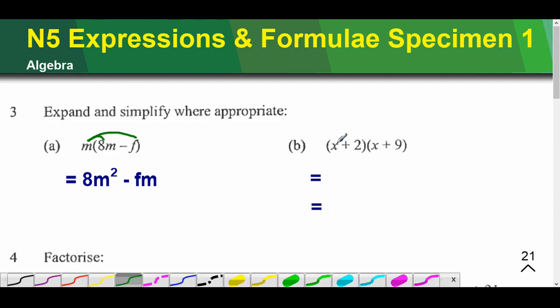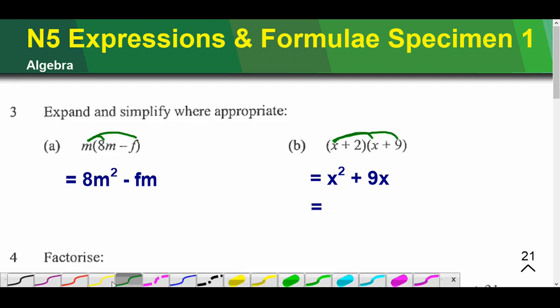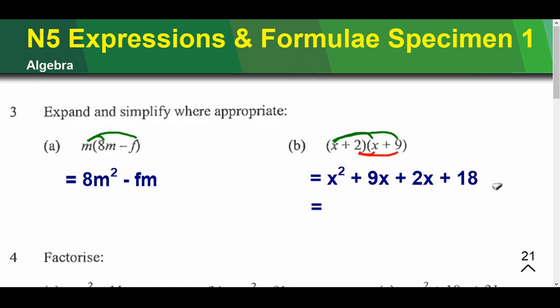The next one, times everything by the x first. So I'm going to do the x times the x, and then the x times the 9. That's going to give me x squared plus 9x, and then I multiply everything by the 2, so the 2 times the x and the 2 times the 9. I'll put that at the end here, so that's plus 2x plus 18.